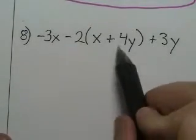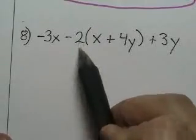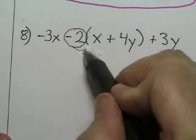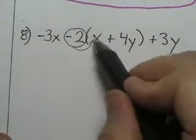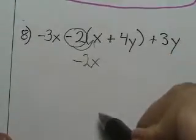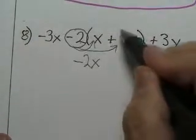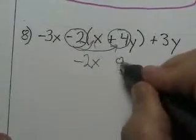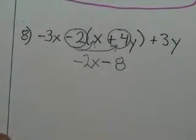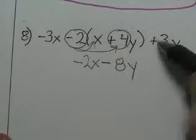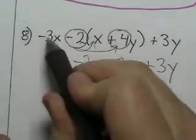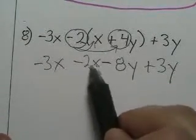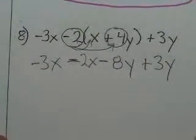Number 8. We have to use distributive property. Now that's not a 2 in front of it — that is a negative 2. Minus 2, negative 2 — think of them as the same. So if I have negative 2 times x, that's like a 1x. Negative 2 times 1 is negative 2, so that's negative 2x. Then I have negative 2 times positive 4: two times four is 8, and there's one negative, and it's a y, so it's negative 8y. I'll bring the rest down: there's a plus 3y and a negative 3x.